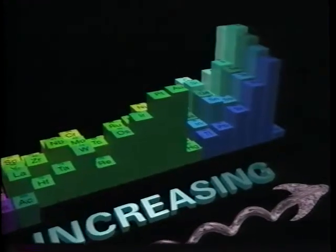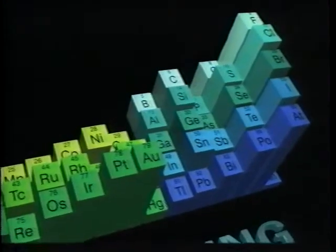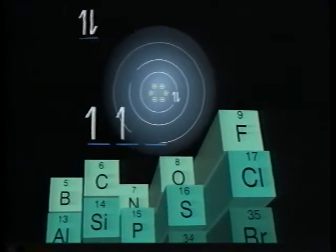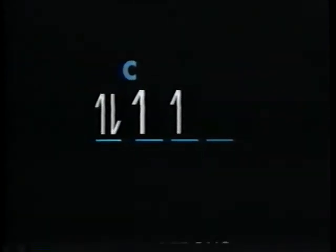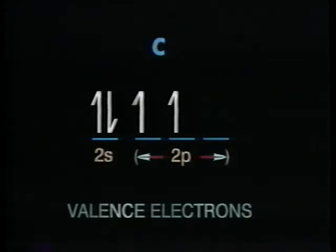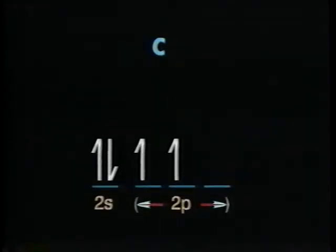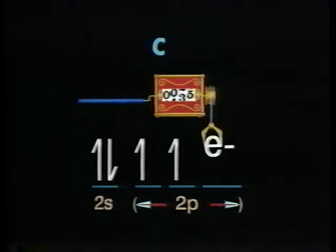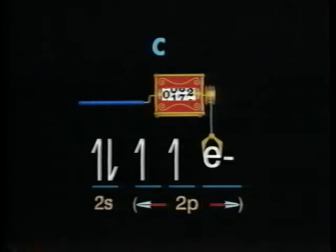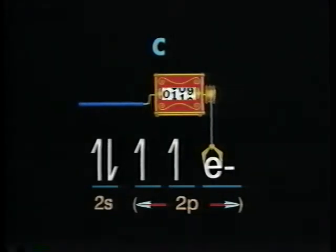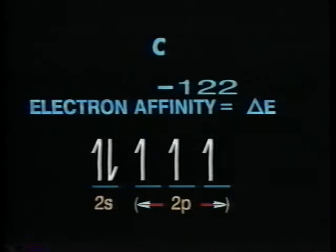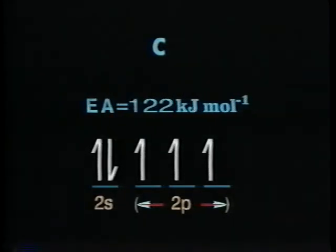There are, however, many exceptions to the periodic trend for electron affinity. Let's look at a first example starting with the element carbon. A neutral carbon atom has six total electrons, but only four of these are valence electrons. Two electrons are in the 2s orbital and two are in the 2p orbital set. Addition of an electron to carbon is favorable because the electron can occupy an empty 2p orbital. Some extra stability is gained by production of a half-filled 2p valence shell. Formation of the carbon anion releases 122 kilojoules per mole of carbon atoms. Carbon's electron affinity is thus plus 122 kilojoules per mole.